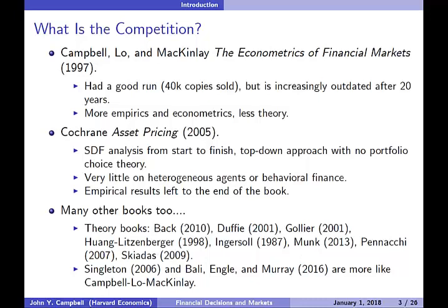In this new book, there's more empirical evidence and more theory, whereas Campbell, Lo and MacKinlay did focus on empirical methods and econometrics. Of course, a leading book that I greatly admire is John Cochrane's book Asset Pricing, the revised edition from 2005. This book has a very clear focus — it uses the stochastic discount factor analysis from beginning to end and takes very much a top-down general equilibrium approach without, for example, covering portfolio choice theory. The book has relatively little on models with heterogeneous agents, doesn't really talk about behavioral finance, and while it does present empirical results, these are left to the end of the book rather than being integrated with the rest of the material.